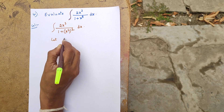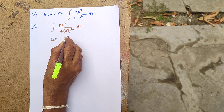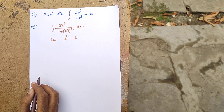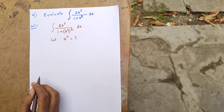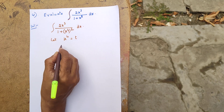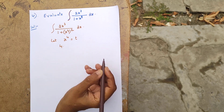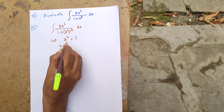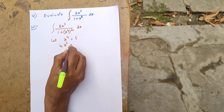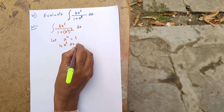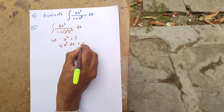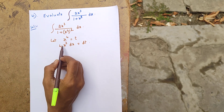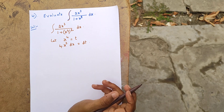Let x to the power of 4 equal to t. Differentiating with respect to x, we get 4x³ dx equal to dt.